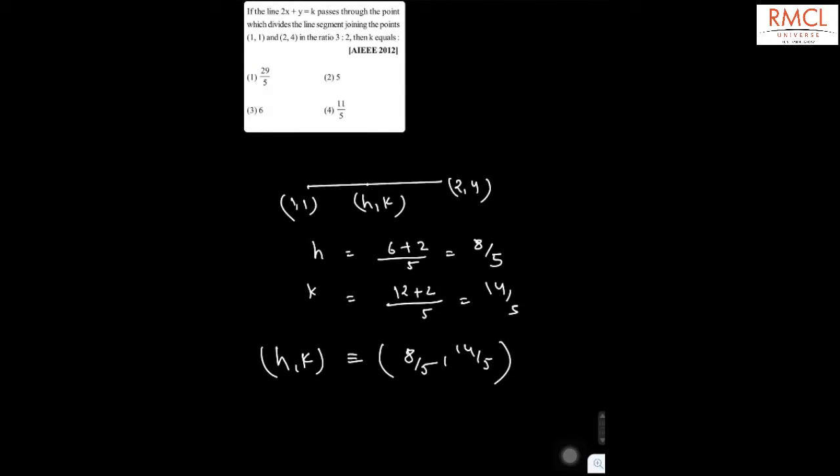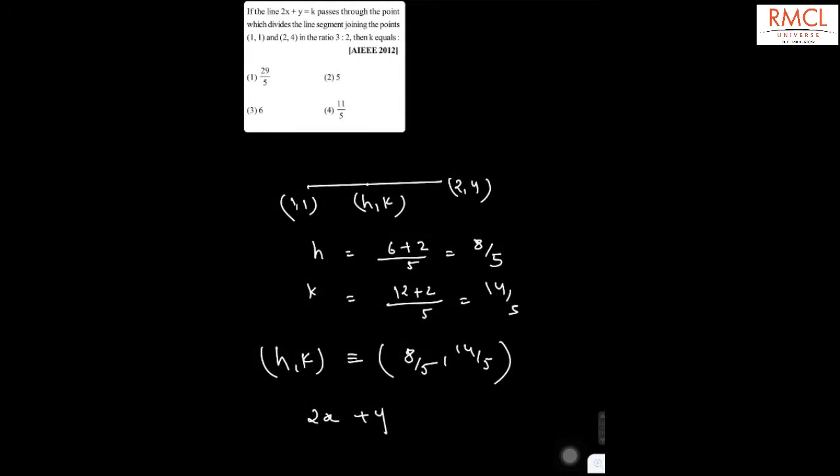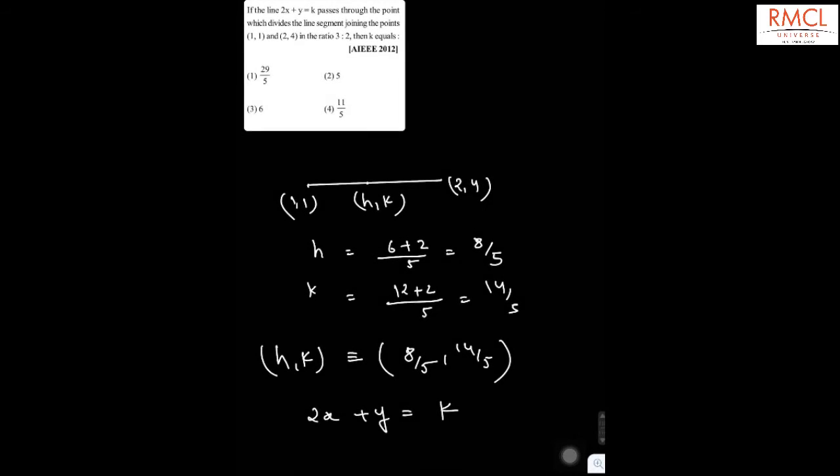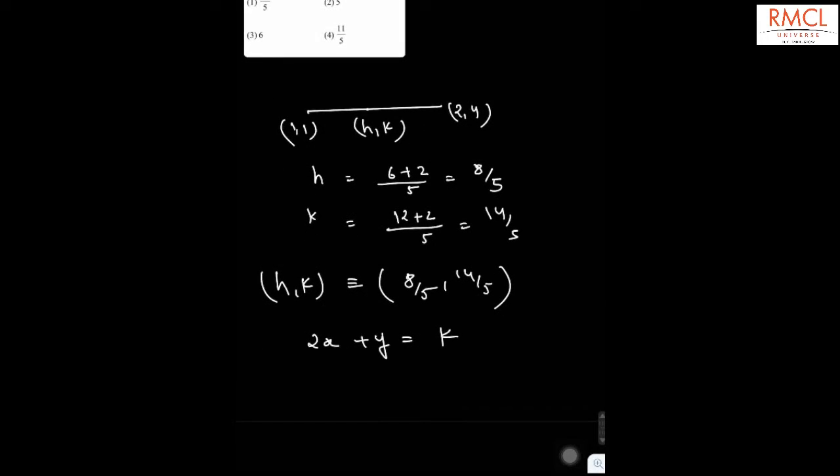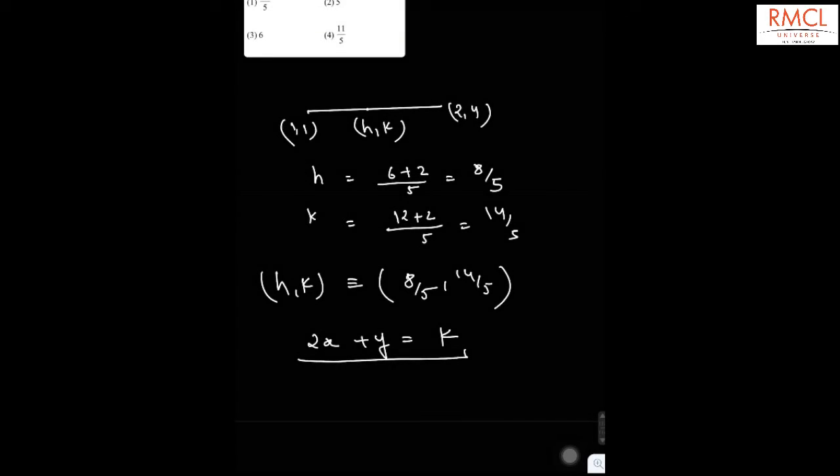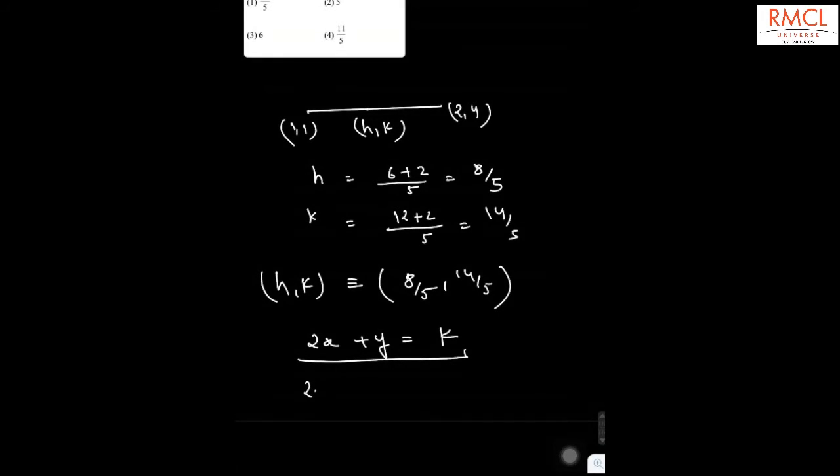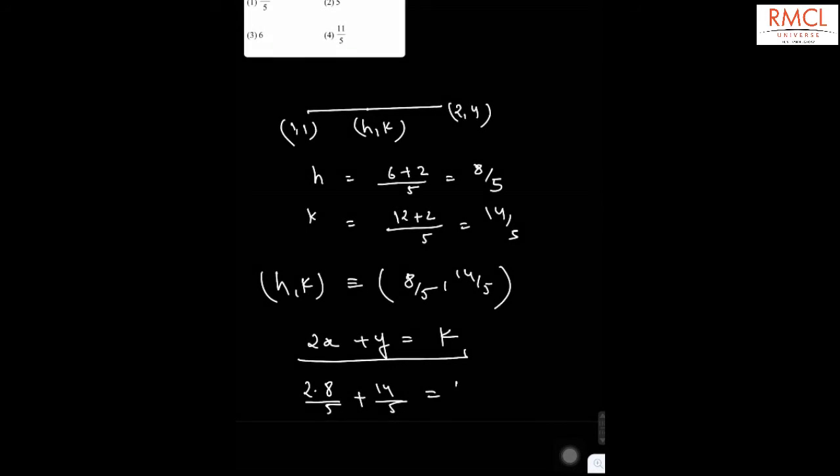And we know that (8/5, 14/5) passes through the point 2x plus y equals k. So if you put this point in this equation of the line, then you will have 2 multiplied by 8 divided by 5 plus 14 by 5 equals k.